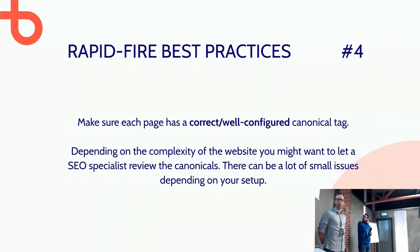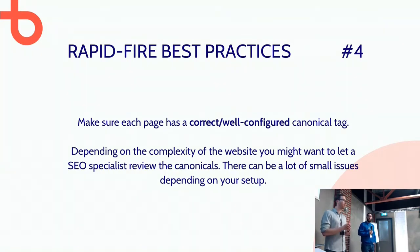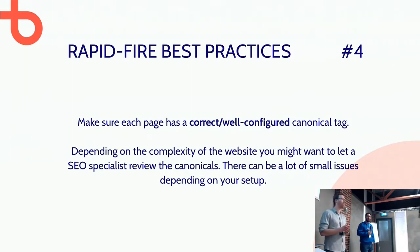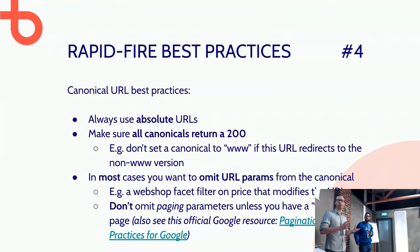It's also important for each page to have a correct and well-configured canonical tag. Depending on the complexity of your website, if you have a small site it could be easy. For a bigger site you may need an SEO specialist. The canonical tag, simply put, indicates to Google which page is the main page and should be indexed — and all variants or duplicate content shouldn't be indexed.